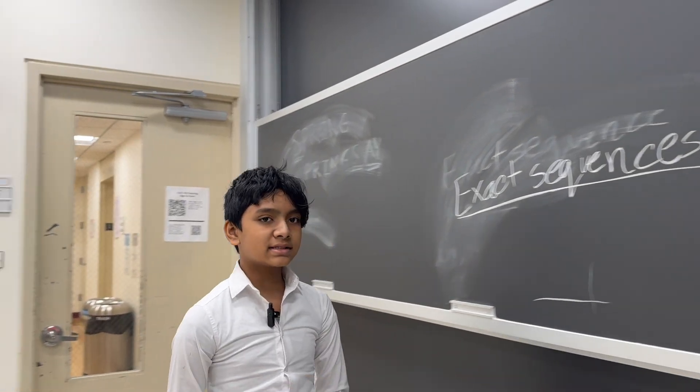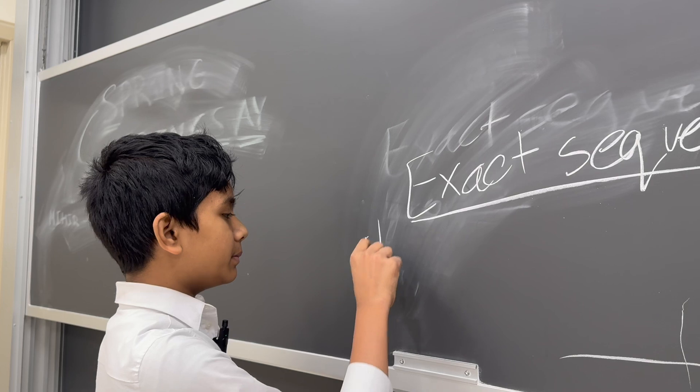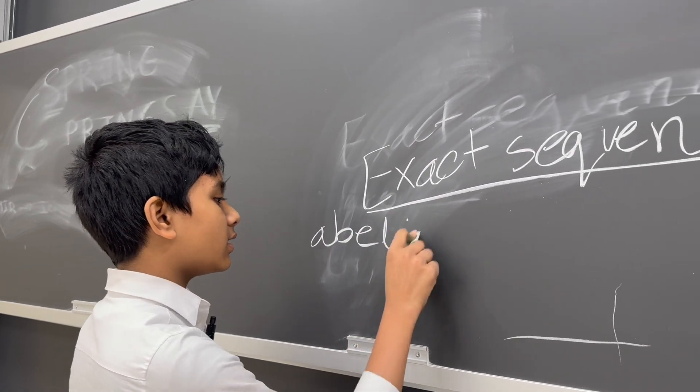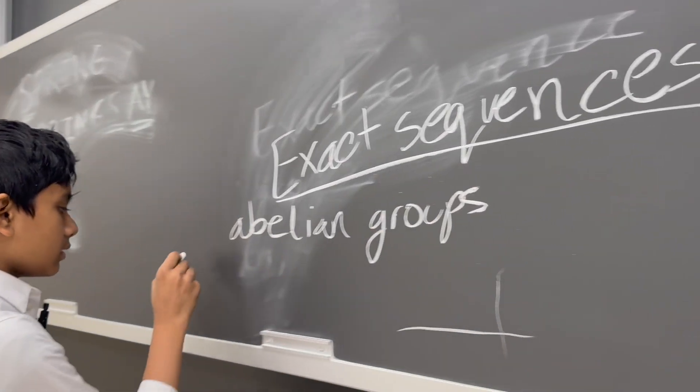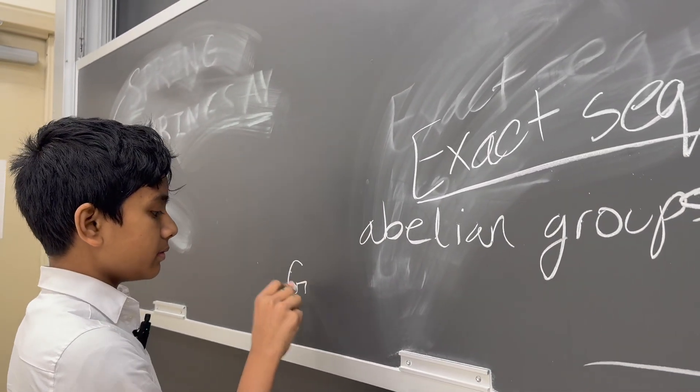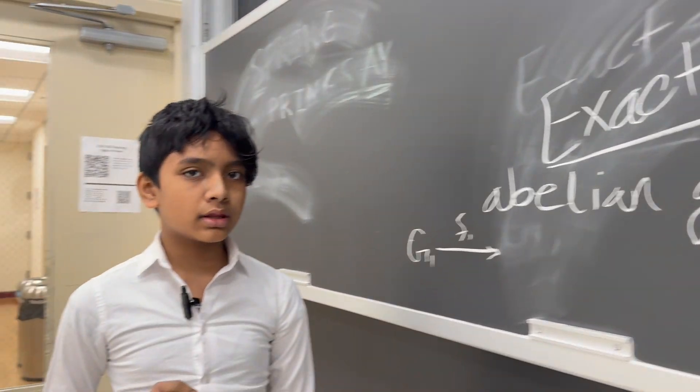So what is an exact sequence? Well, it's basically a sequence of groups, usually abelian groups, which we learned about in another video. And between them, we have functions that map one group to the other.